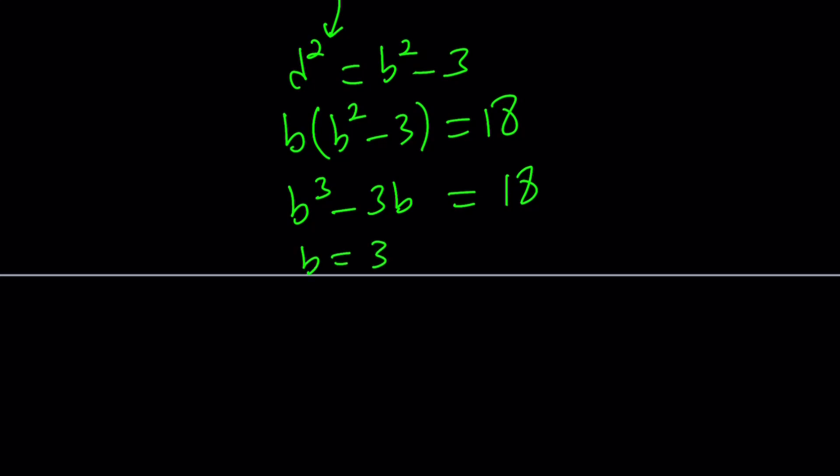b equals 3 works. 27 minus 9 is equal to 18, right? Hopefully you'll agree with me on that. So b equals 3 works. Let's go ahead and find the other ones from here.